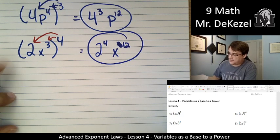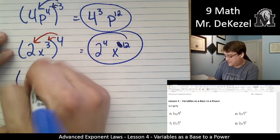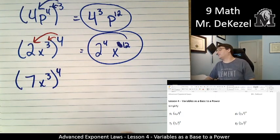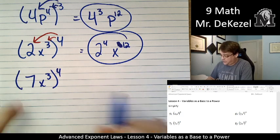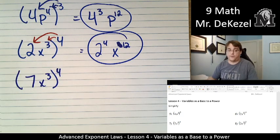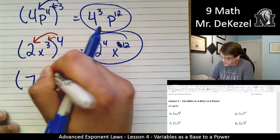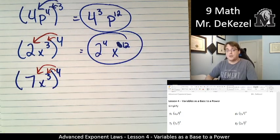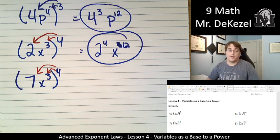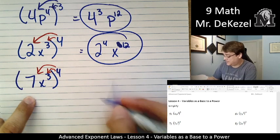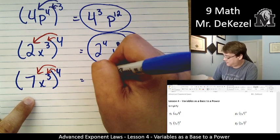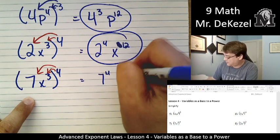Let's do the next one. We have seven x to the power of three again all to the power of four. So we know what four times three is by now but anyway, this four applies to everything in the brackets, both the variable and the constant. So we are going to have seven to the power of four, x to the power of twelve.